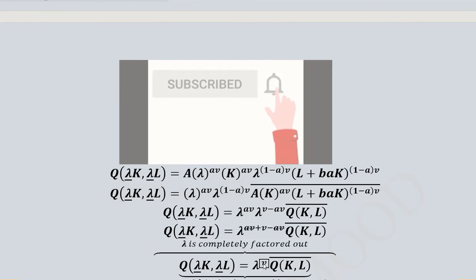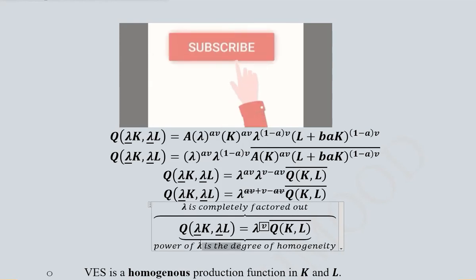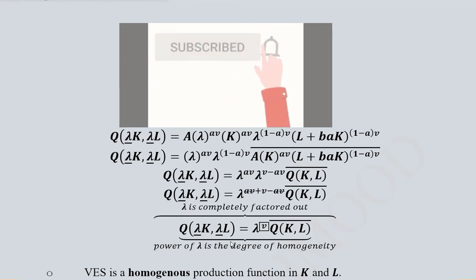After simplification, we get lambda raised to the power v times the original production function. This v represents the degree of homogeneity, the power of lambda, and it's completely factored out, showing we have a homogeneous production function.